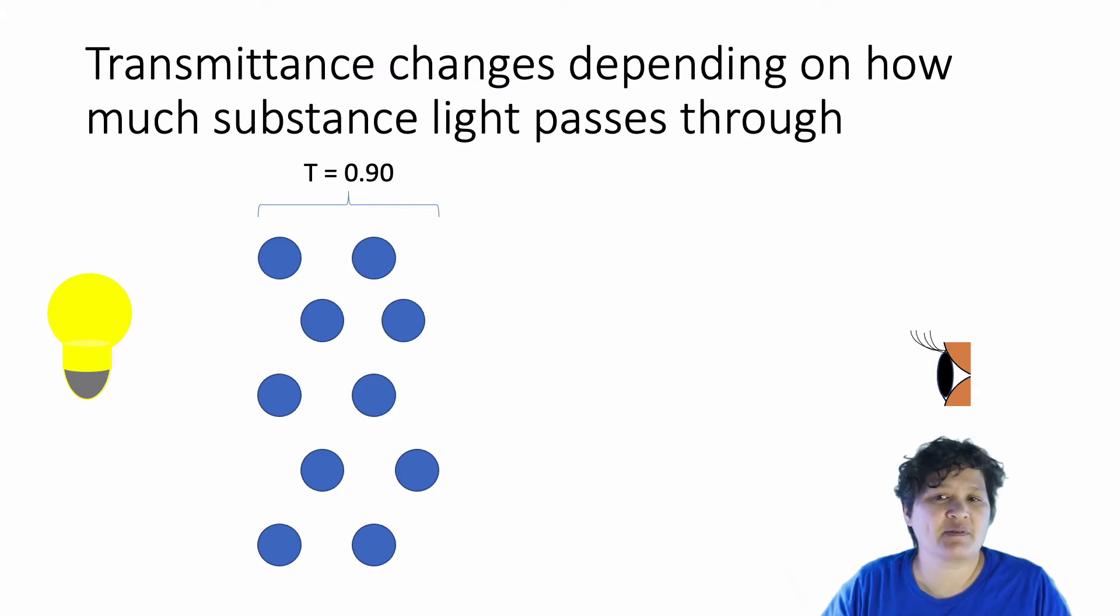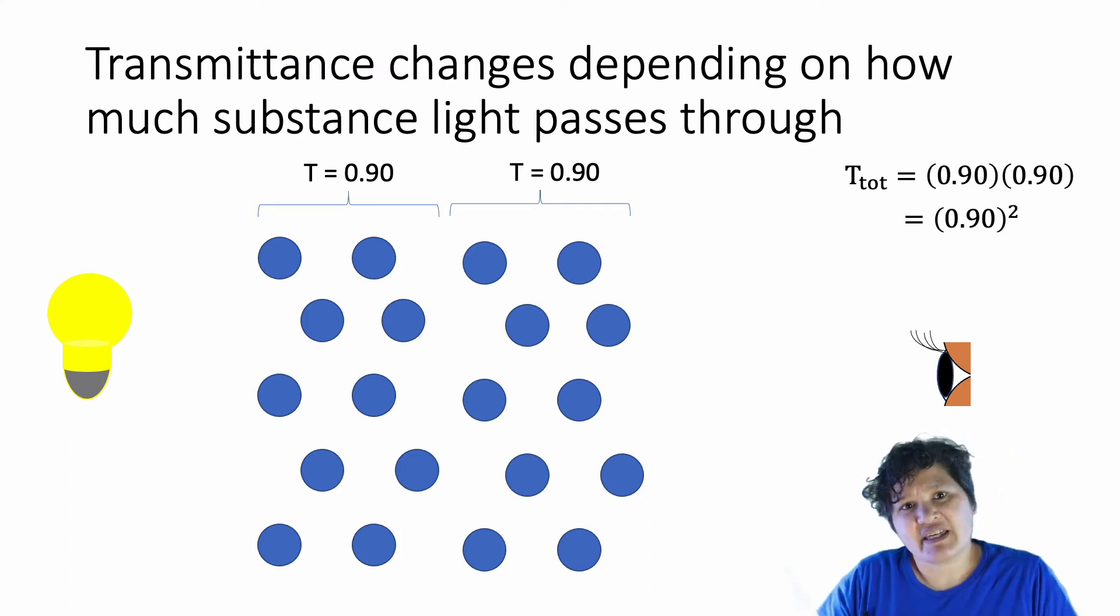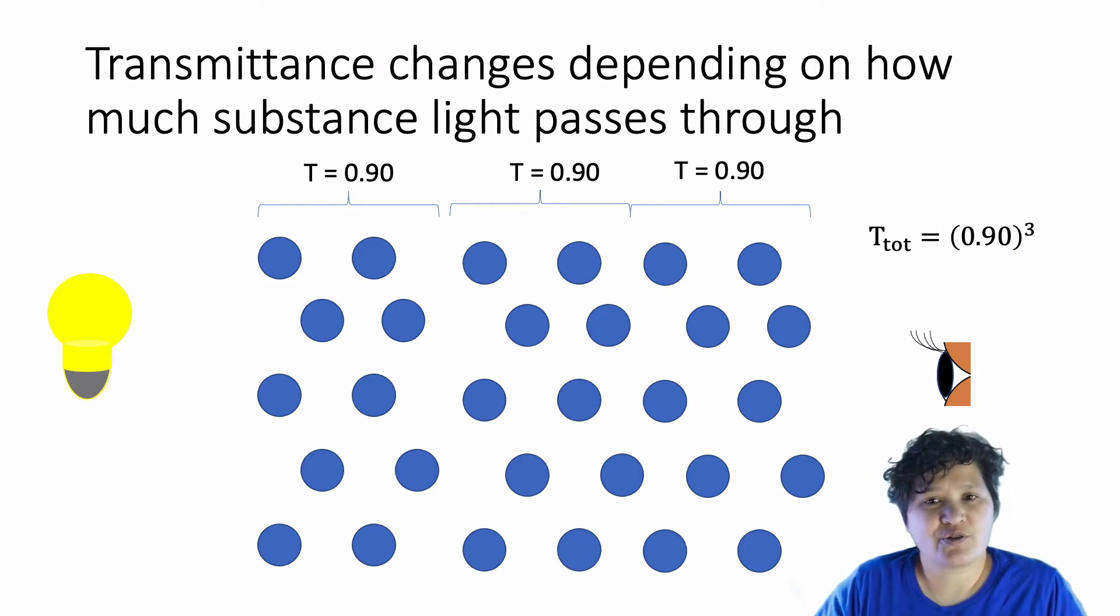Secondly, the transmittance of a substance depends on how much of that substance the light has to pass through. So here we have an aliquot of substance that has a transmittance of 90%. If the light has to pass through another similar aliquot of substance, it will lose another 90% of what entered the second swath. So the total amount of light that gets through to the other side will be 0.90 times 0.90 or 0.90 squared. And you could see that if there's a third similar aliquot that's added on to the far side, we are going to lose another 90% of what came out the second swath. So our total transmittance would be 0.90 cubed. In other words, transmittance is exponentially related to the path length that the light has to pass through.